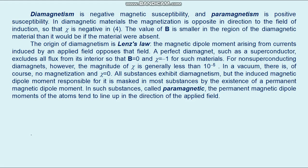Diamagnetism is a negative magnetic susceptibility and paramagnetism is a positive susceptibility. In diamagnetic materials the magnetization is opposite in direction to the field of induction, so χ is negative; the value of B is smaller in the region of the diamagnetic material than it would be if the material were absent. The origin of diamagnetism is Lenz's law — the magnetic dipole moment arising from currents induced by an applied field opposes that field. A perfect diamagnet such as a superconductor excludes all flux from its interior so that B equals zero and χ equals minus one.